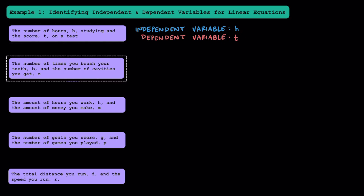Now let's try this one, where we have the number of times you brush your teeth, B, and the number of cavities you get, C. Think about which one makes more sense. Does the amount of times you brush your teeth depend on your cavities, or does the cavities you get depend on the number of times you brush your teeth? Hopefully you were thinking that the number of cavities you get really does depend on how much you brush your teeth.